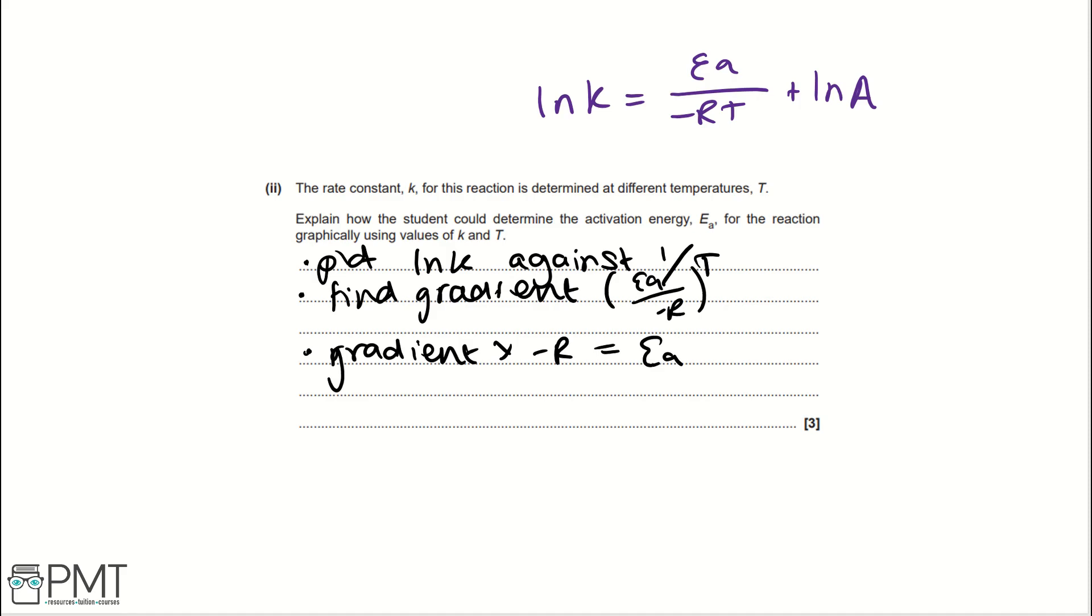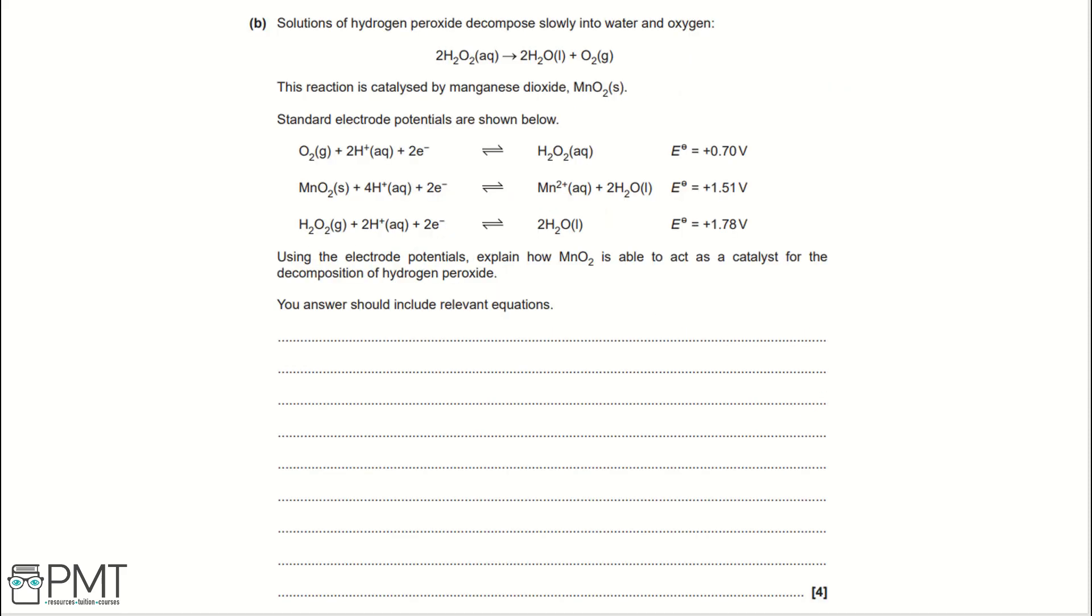For this question, you get a mark for each of the bullet points. So, one for saying plot lnK against 1 over T, one for finding the gradient, and one for saying that the gradient multiplied by minus R equals EA.